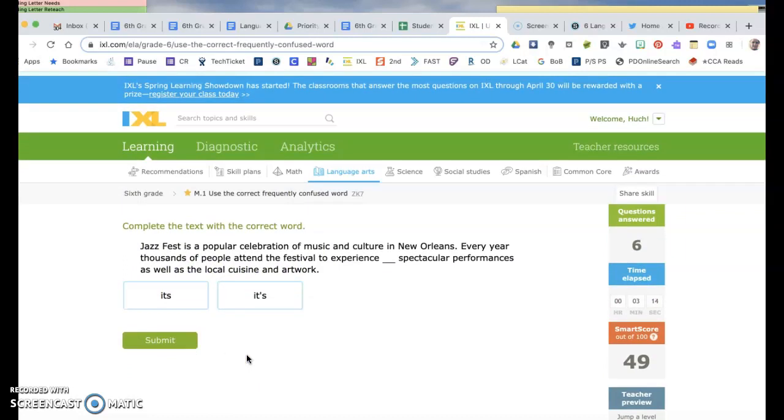Jazz Fest is a popular celebration of music and culture in New Orleans. Every year, thousands of people attend the festival to experience its spectacular performances. So I need a possessive because it's like the festival's spectacular performances. The one that is possessive is the one without the apostrophe in this case, which I know is weird, but that's because this one means it is. But that one doesn't make sense, to experience it is spectacular performances, so I'm going to go with that one.